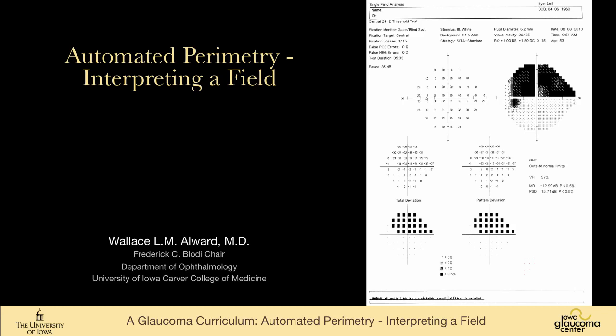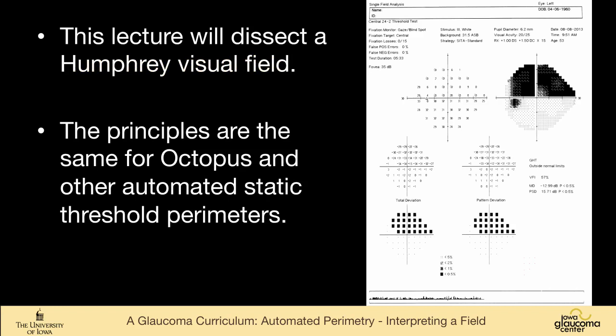What I'd like to do is just take a field and go through the whole thing and tell you how you might look at a visual field, how I look at a visual field. We're going to talk about a Humphrey field because that's what I have the most experience with, and that's most of our perimeters, automated perimeters are Humphreys, but the same principles would apply for Octopus and other automated static threshold perimeters.